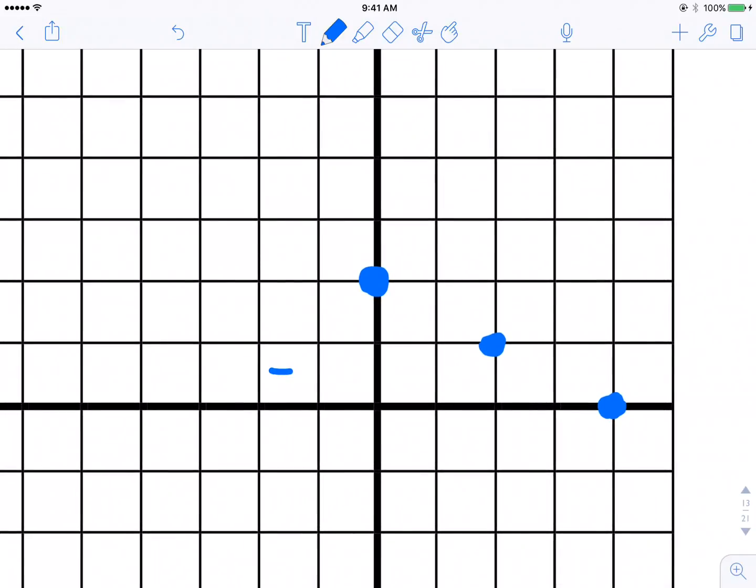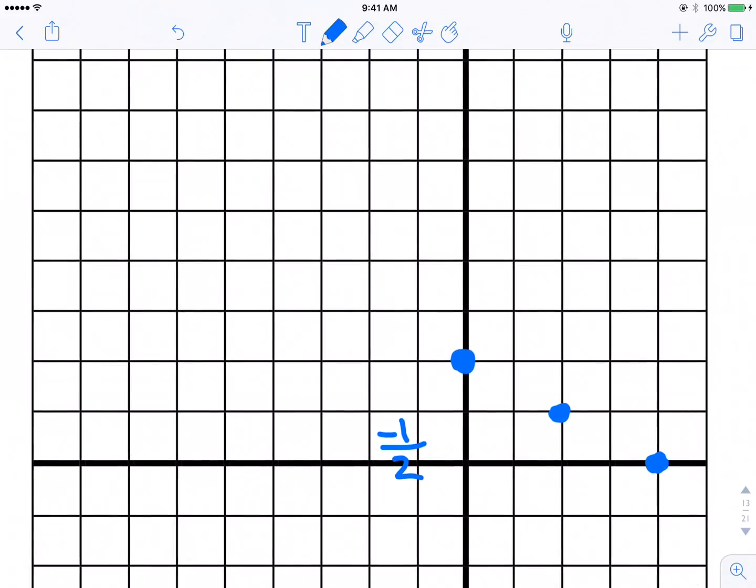Now this is a negative 1 over 2 slope. If I wanted to create my line going the other direction, this way, I would have to be really careful. Because I don't want to count down 1 and then over 2, because now I don't have a negative slope anymore. So that's the wrong way to do it. But really what you end up doing is saying, you know what, if this was negative 1 over 2, if I switch this around and say 1 over negative 2, then I would go up 1 and I would go left 2.